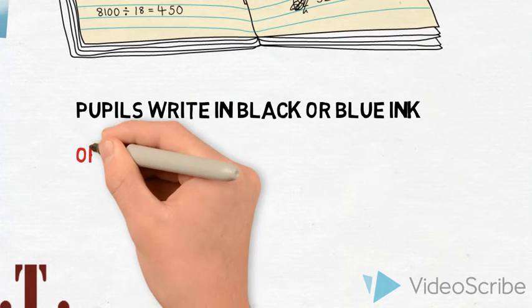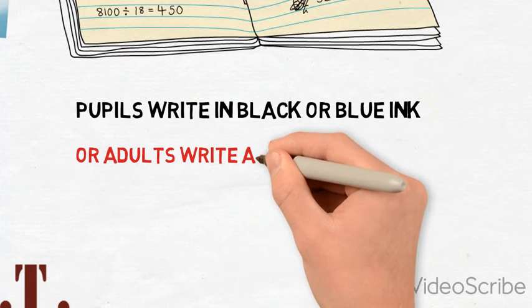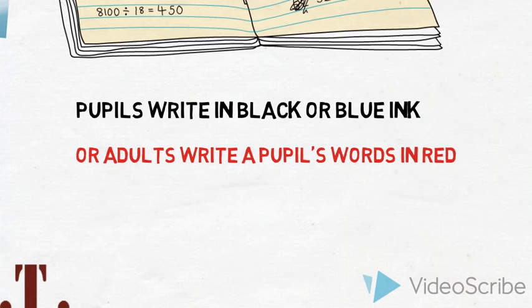Pupils write in black or blue ink. Or adults write a pupil's words in red.